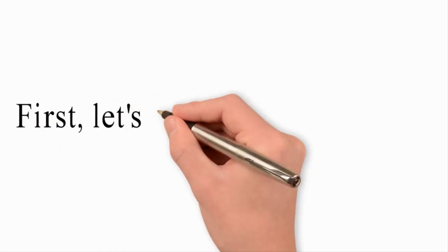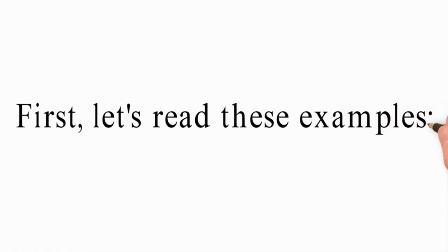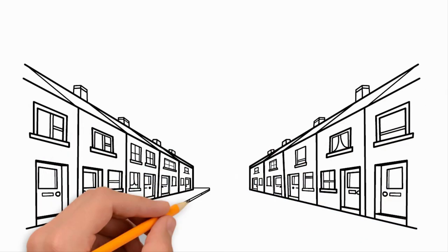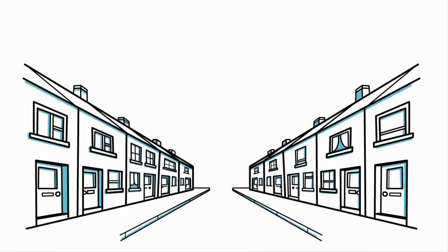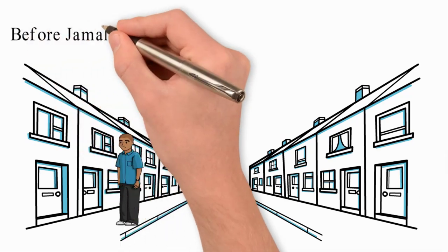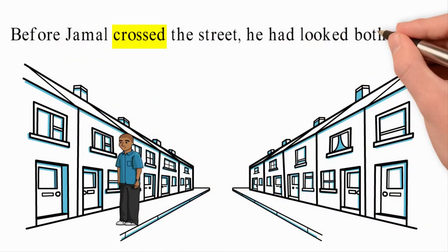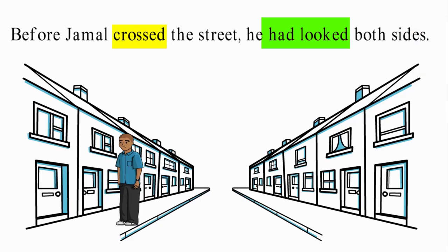First, let's read these examples. Example 1: Before Jamel crossed the street, he had looked both sides.